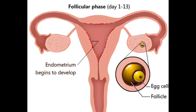The Follicular Phase runs from Day 1 to 13. During this phase, the hormone FSH, or follicle-stimulating hormone, stimulates growth of ovarian follicles. One follicle becomes dominant and secretes estrogen, which helps rebuild the endometrial lining.